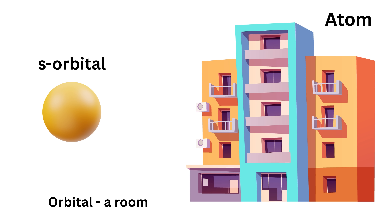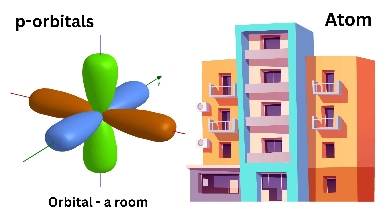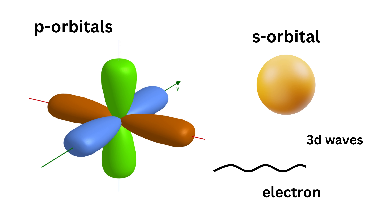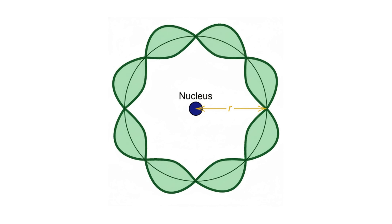That whole room where the electron can move freely is what we call an orbital. Some rooms are round like a bubble, called s orbitals, and some are shaped like peanuts, called p orbitals. But in every case, the electron moves within that space rather than following a fixed circular path.